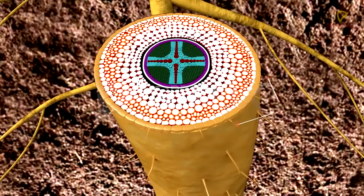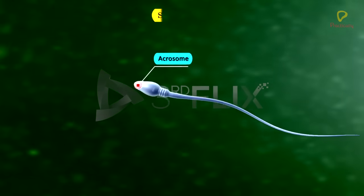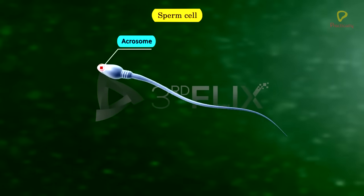Golgi apparatus helps in the formation of root hairs from the root epidermal cells. Acrosome of the animal sperm cell is synthesized by Golgi apparatus.